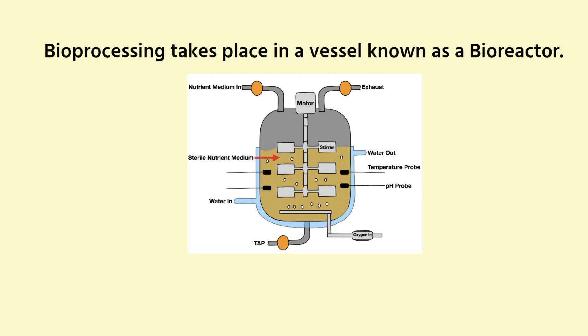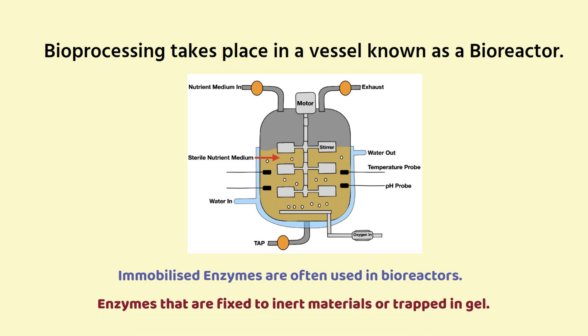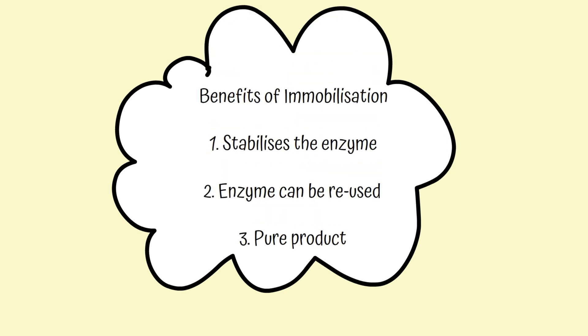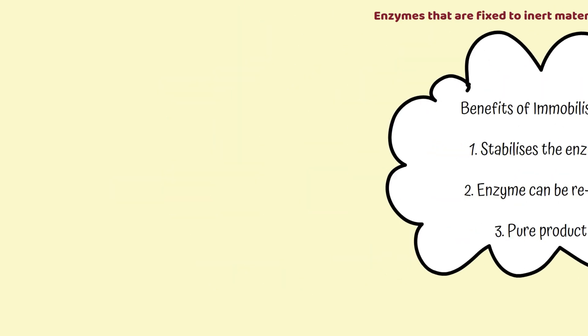When placing enzymes in a bioreactor, immobilised enzymes are typically used — this means the enzymes are fixed to an inert material or trapped in a gel. Using immobilised enzymes gives certain benefits: first, it stabilises the enzyme; second, the enzymes can be reused; and third, you have a pure product. You don't have to perform a separate separation technique to remove the enzymes, because they're immobilised — they're not in the product.